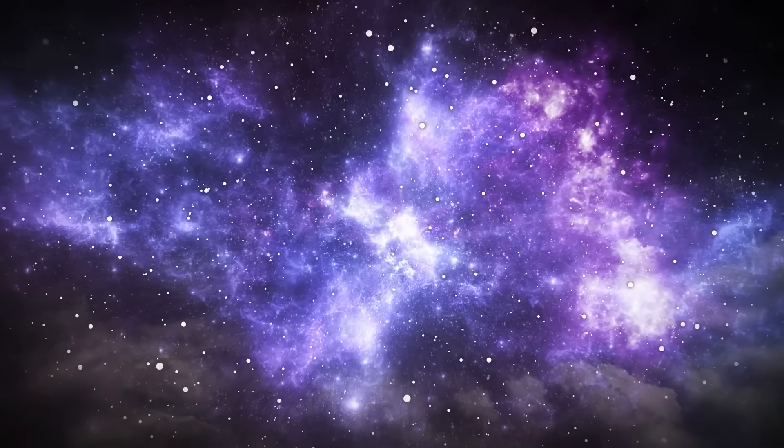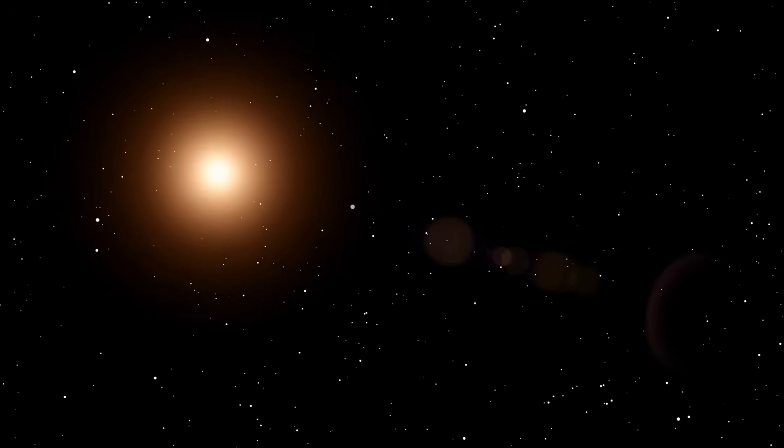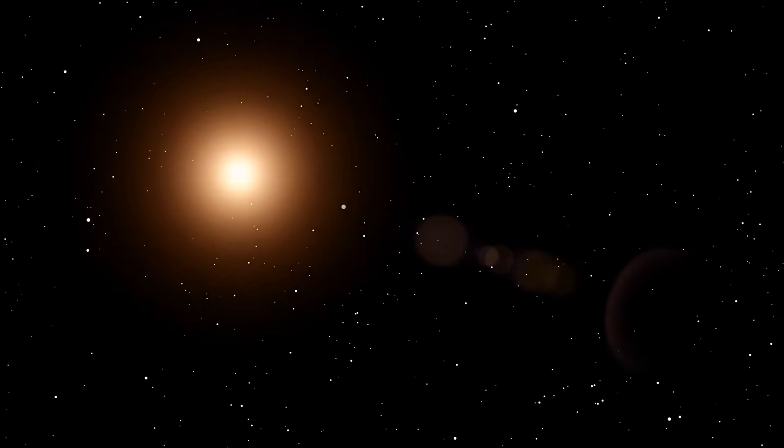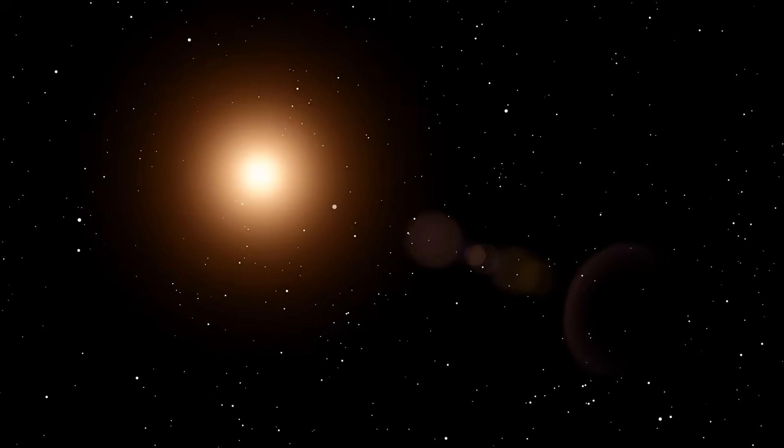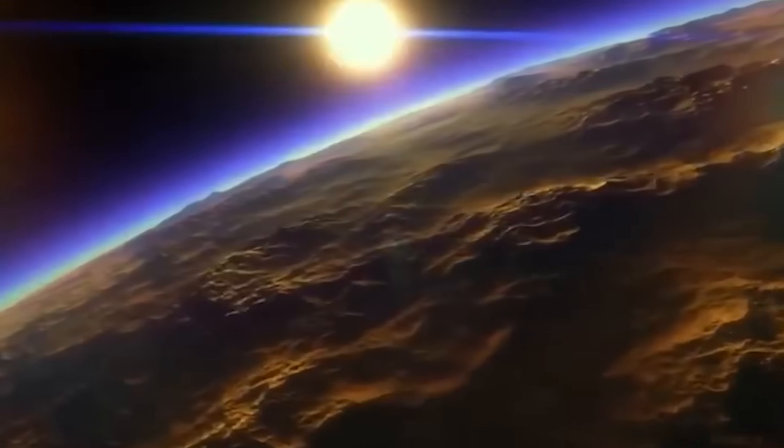As matter spirals into a black hole, it heats up and glows brilliantly in X-rays and infrared. To JWST's detectors, this glow can look a lot like the light from billions of stars. If you don't account for it, you might overestimate a galaxy's mass by a huge margin.